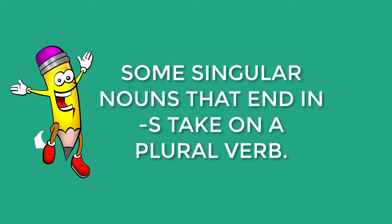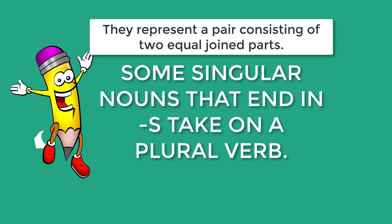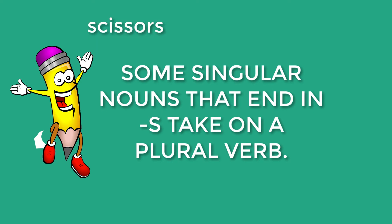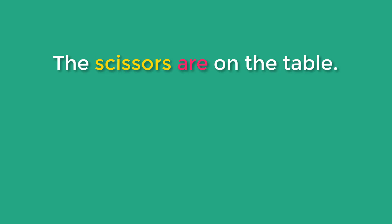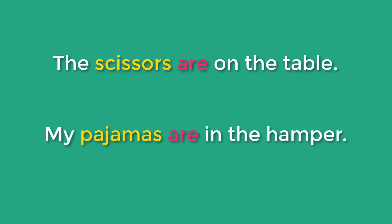Let's go on to singular nouns that end in S. For these singular nouns, you will use a plural verb, because although they are singular, they represent a pair consisting of two equal joined parts. Some of these examples are scissors, trousers, pajamas, and glasses. They take a plural verb. The scissors are on the table. My pajamas are in the hamper.